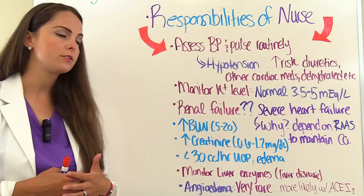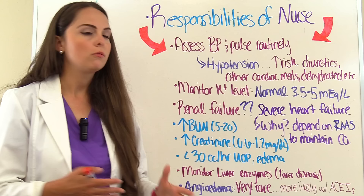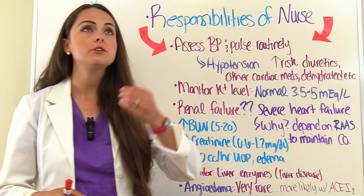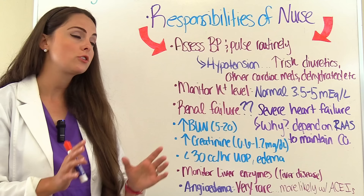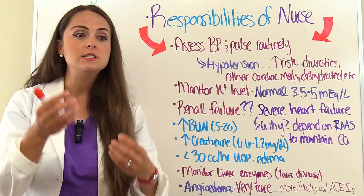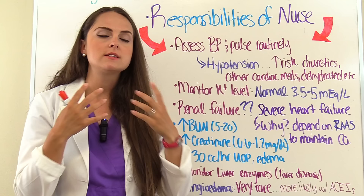Lastly, I want to mention angioedema. It's very rare with an ARB compared to an ACE inhibitor, but it can occur in some patients, so be aware. This involves swelling in the deep tissues — swelling of the face, lips, and tongue — and it can cause difficulty breathing. Always be on the lookout for this in your patient taking this medication.